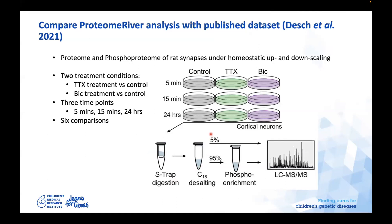I used a publicly available DIA dataset of phosphoproteome and proteome from rat synaptics under homeostatic up- and down-scaling. We have two different conditions: TTX treatment and bicuculline (BRC) treatment, and three time points — 5 minutes, 15 minutes, and 24 hours — giving six comparisons in total for each treatment versus control.